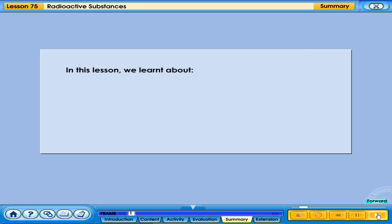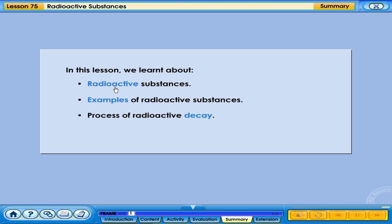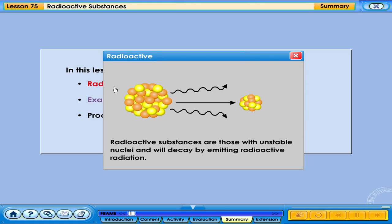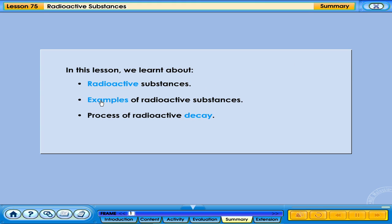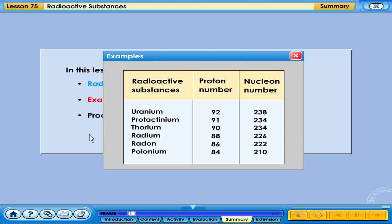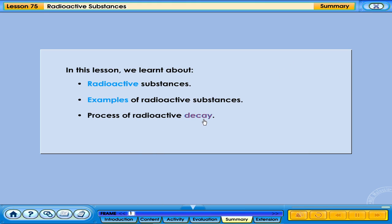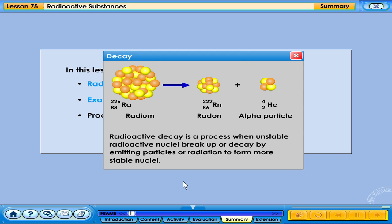In this lesson, we learned about radioactive substances, examples of radioactive substances, and the process of radioactive decay. Radioactive substances are those with unstable nuclei and will decay by emitting radioactive radiation. Radioactive decay is a process when unstable radioactive nuclei break up or decay by emitting particles or radiation to form more stable nuclei.